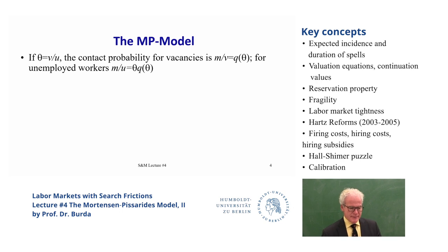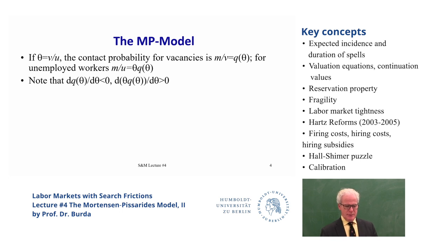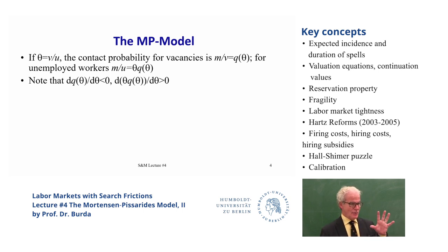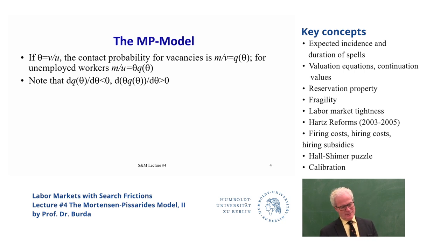If you take any constant returns function and divide by any of its arguments, you end up getting a rate. Dividing by unemployment gives you the job-finding rate from the perspective of an unemployed person. Dividing by vacancies gives you the vacancy success rate. Those two are linked in a special way. Think of theta in this model as an endogenous outcome and a sufficient statistic of labor market tightness. If you know theta, you know how tight the labor market is — it's the ratio that counts. Workers love tightness; firms hate tightness.